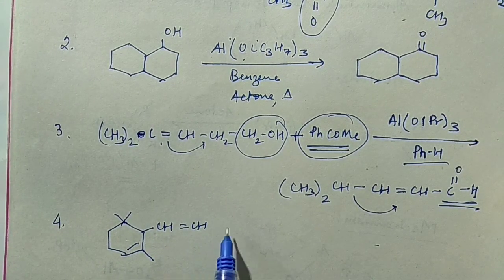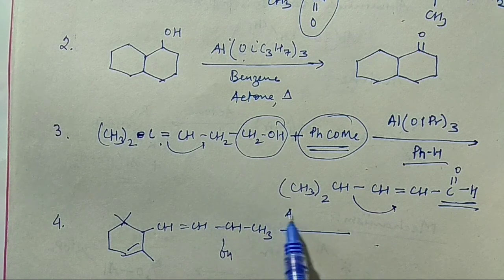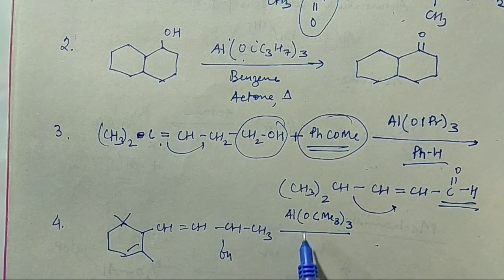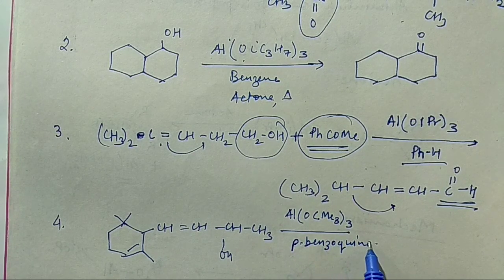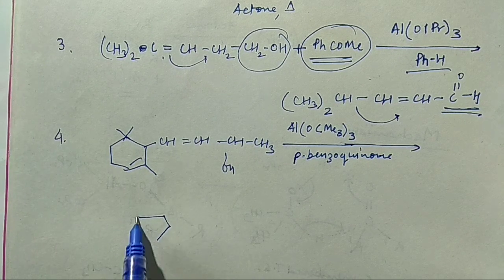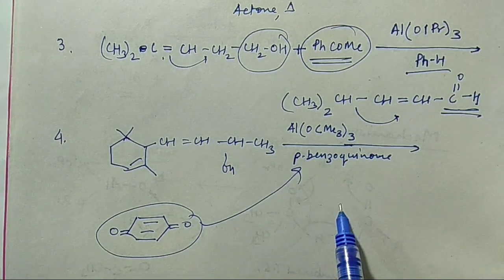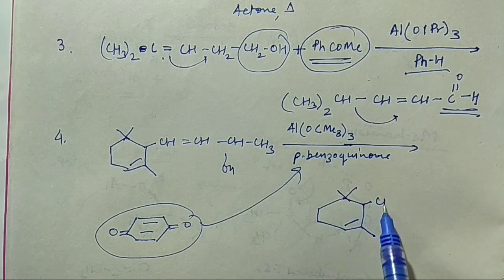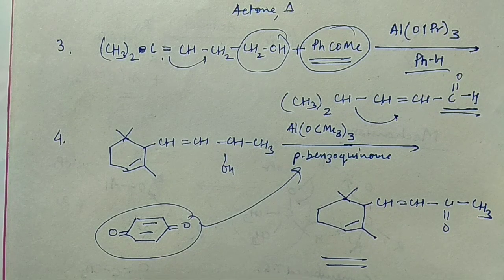Example 4: CH=CH–CH(OH)–CH₃ is treated with Aluminium Tertiary Butoxide Al(OC(CH₃)₃)₃ and benzoquinone as the hydride acceptor. Benzoquinone (para-benzoquinone) is a better hydride acceptor — its structure is a cyclic diketone. So ultimately we get CH=CH–C(=O)–CH₃: no effect on the double bond, and the OH is converted into a keto group.